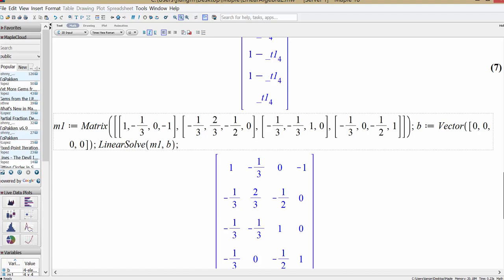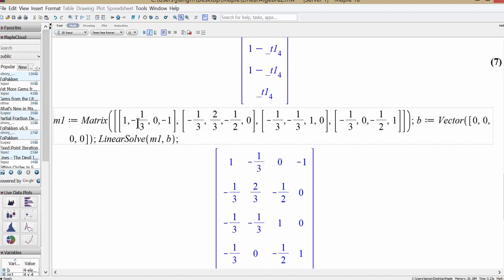Now here is another one. We redefine the matrix here. And then the vector on the right-hand side is 0, 0, 0. So this is going to be a homogeneous system with coefficient matrix given by this.